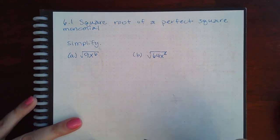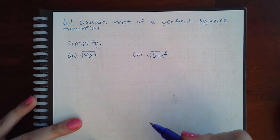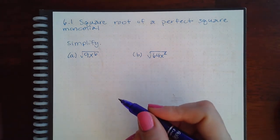Here we have 6.1 square root of a perfect square monomial. So now we have the numbers and the variables together.